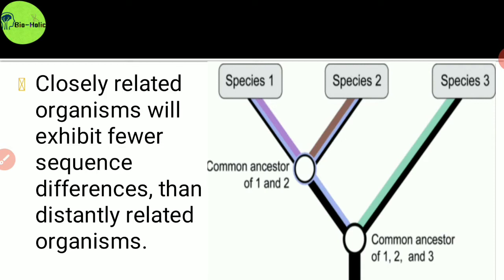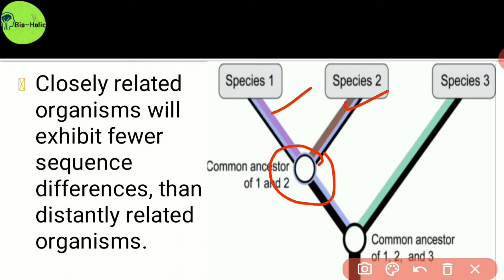In this picture, species 1 and species 2 contain the same ancestor, but species 3 grows from the oldest or first ancestor directly.